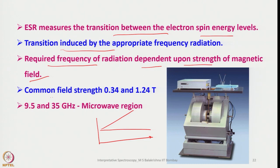Common field strengths are in the range of 0.34 to 1.24 tesla. The microwave region used is between 9.5 and 35 gigahertz, applied in a direction perpendicular to the applied magnetic field to perform transition of electron spins.